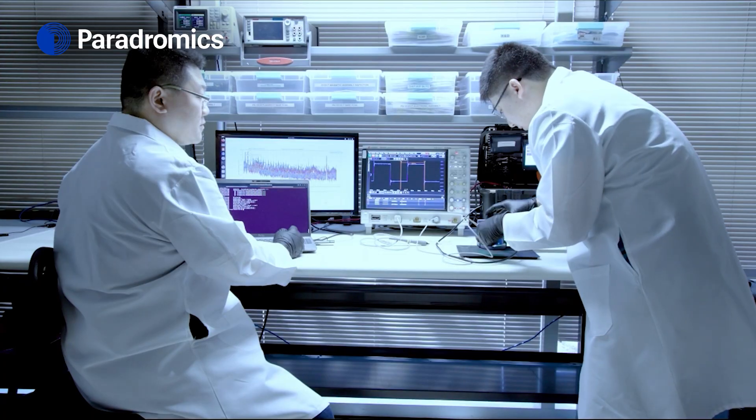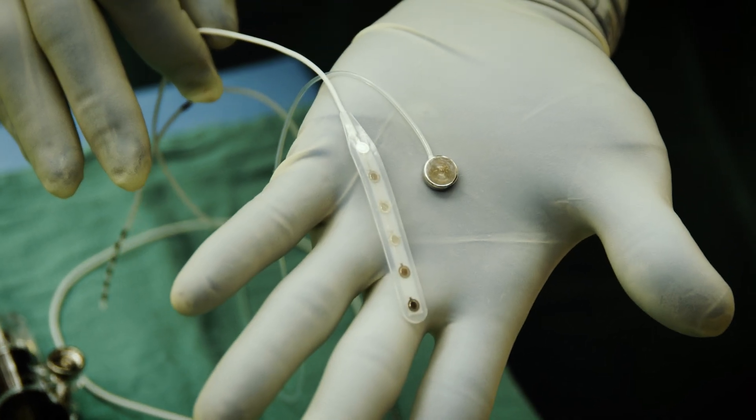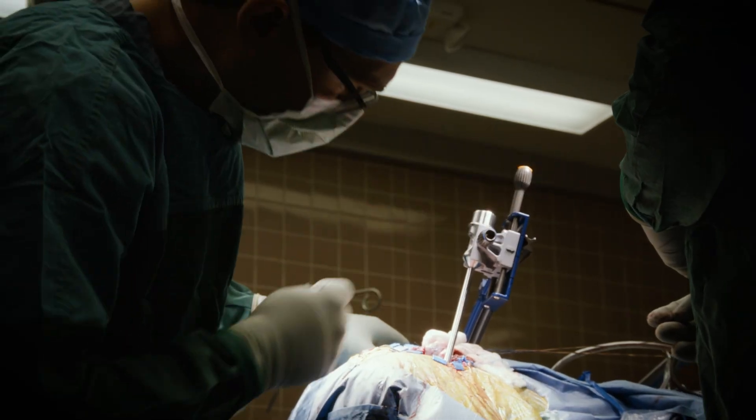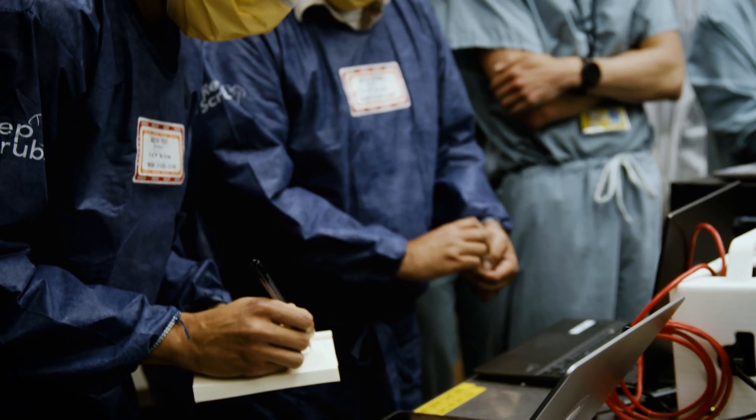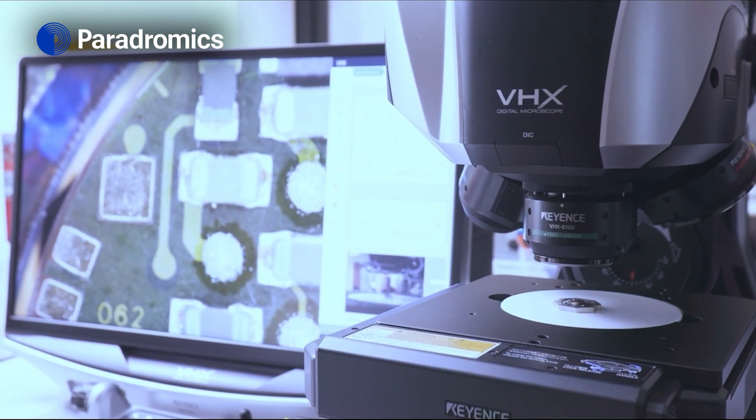This is the first implantation of the Conexus brain-computer interface by Paradromics into a human participant. The chip has over 400 tiny sensors attached to the bottom side of it, and these can be implanted into the brain. Then the signal can be extracted from the electrodes through the chip and output to a device that communicates with the computer.